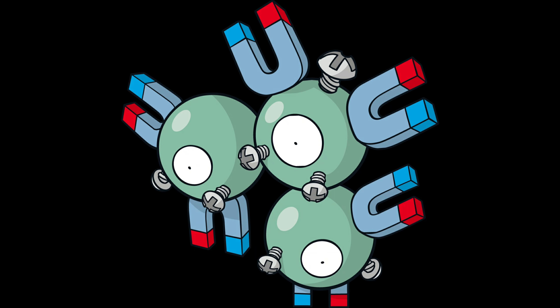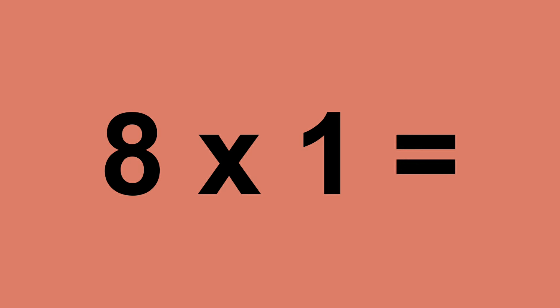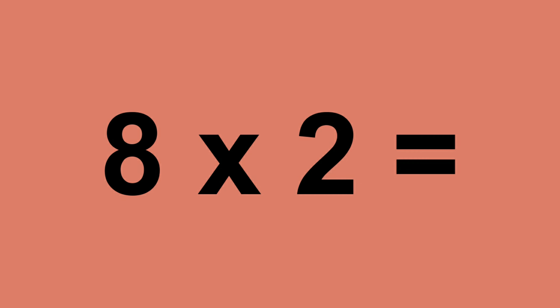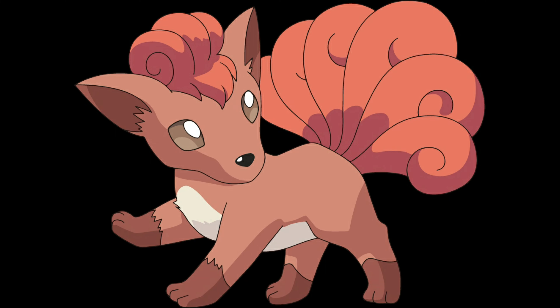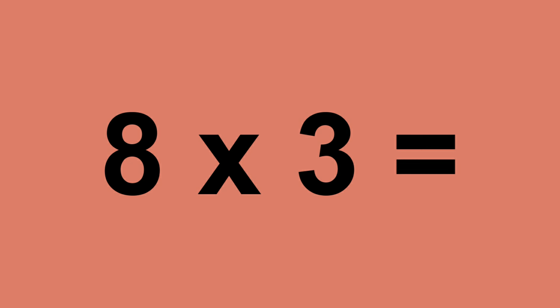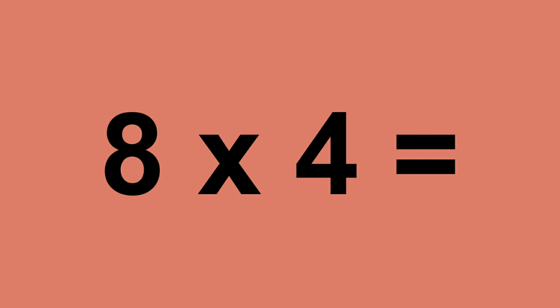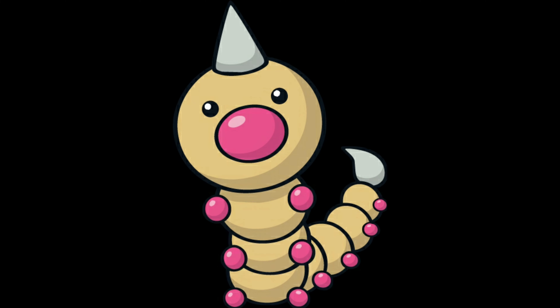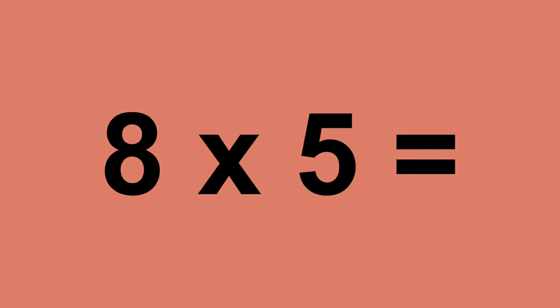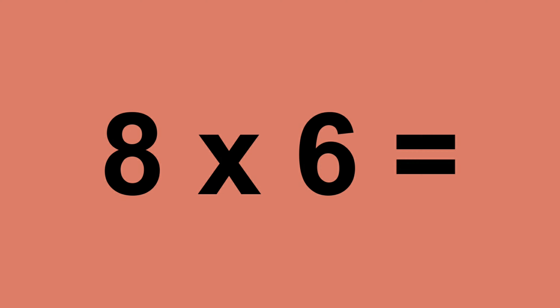Eight times zero equals zero. Eight times one equals eight. Eight times two equals sixteen. Eight times three equals twenty-four. Eight times four equals thirty-two. Eight times five equals forty. Eight times six equals forty-eight.